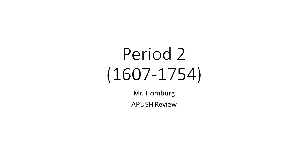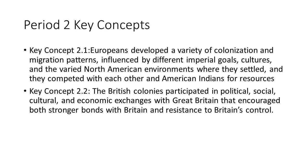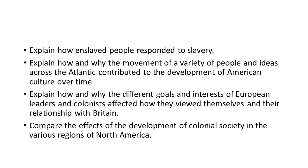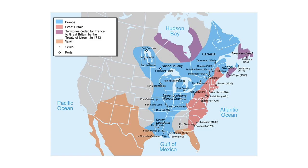We'll be covering these key concepts and learning objectives — these are the things you should be able to do. You can pause the screen and read those. We're going to start off with the settling of modern-day United States, looking mainly at three empires: the Spanish, the French, and the British. We'll also talk a little bit about the Dutch Empire.